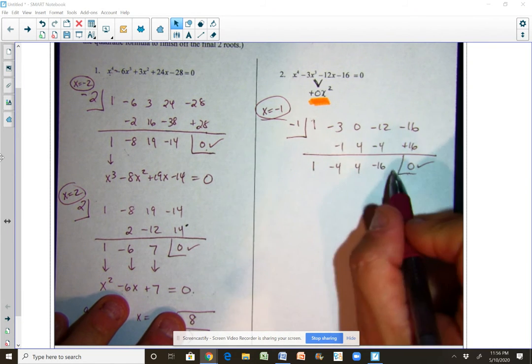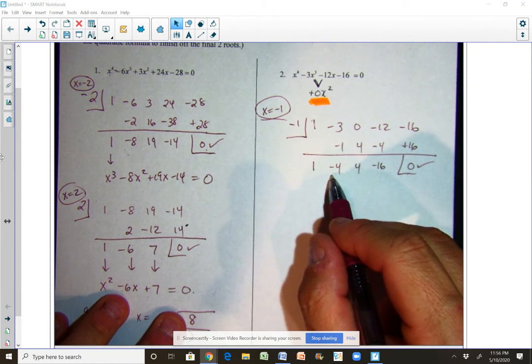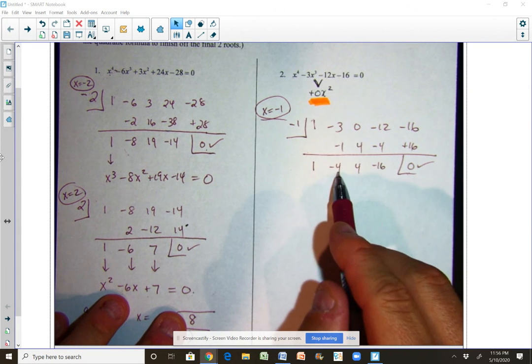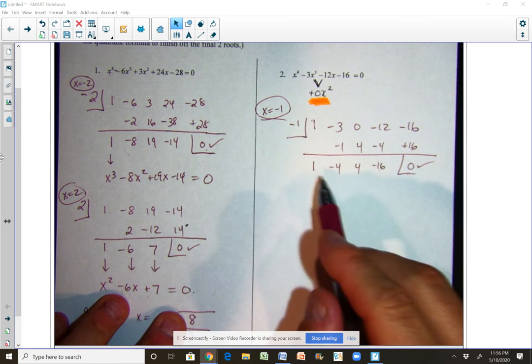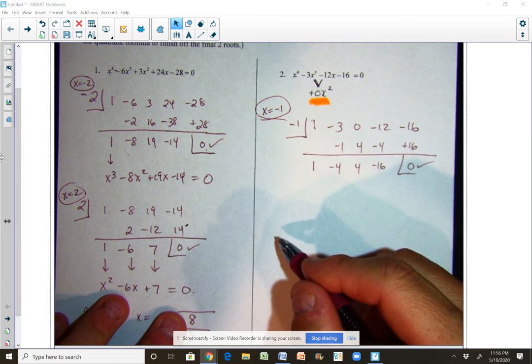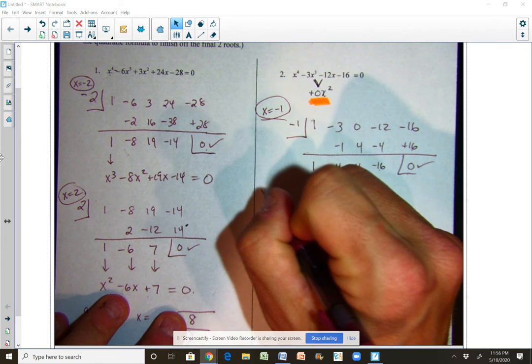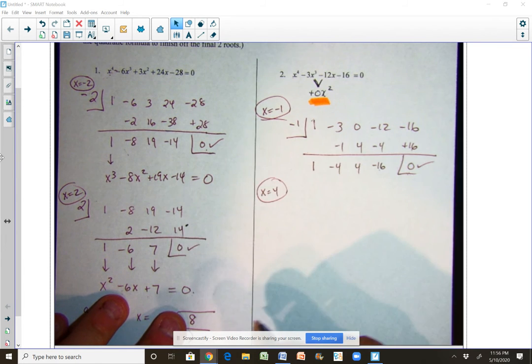We can take this now which is a third degree—so from a fourth degree this is now a third degree—x cubed minus 4x squared plus 4x minus 16, and we can use that with our another rational root, so we know that there's another rational root at x equals 4.